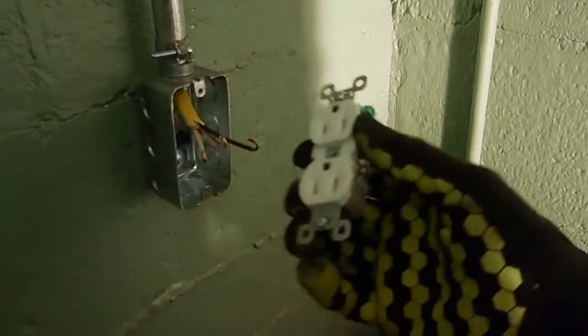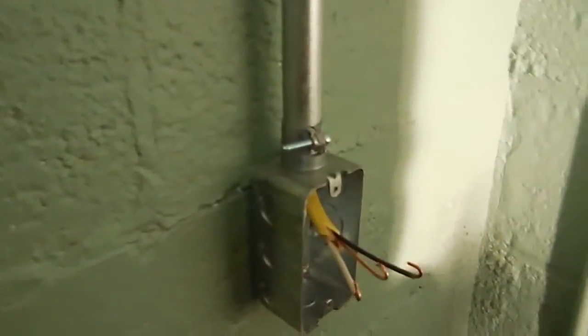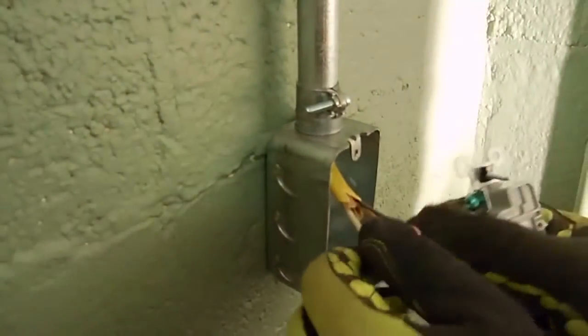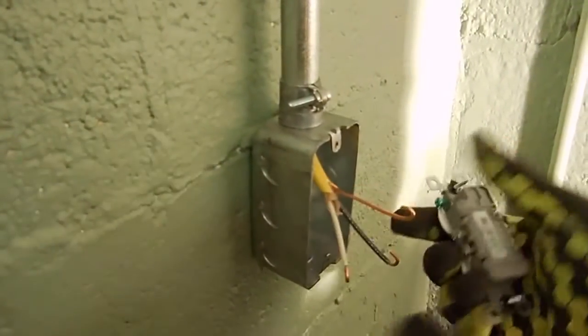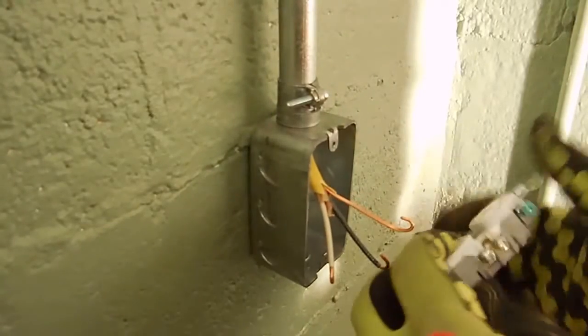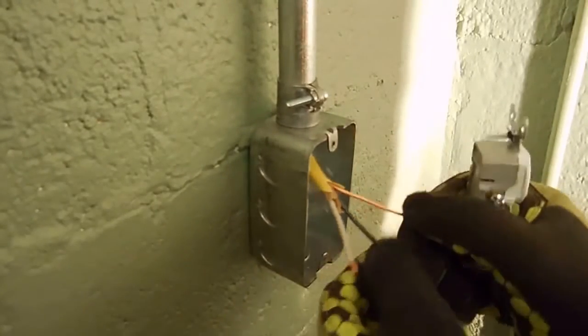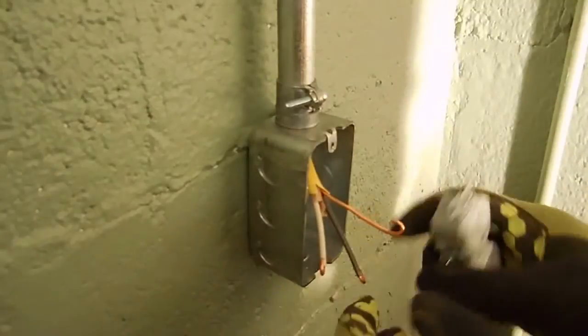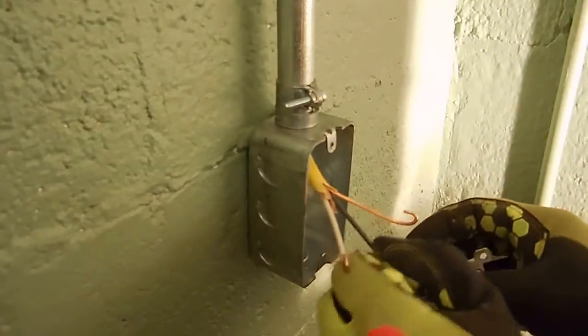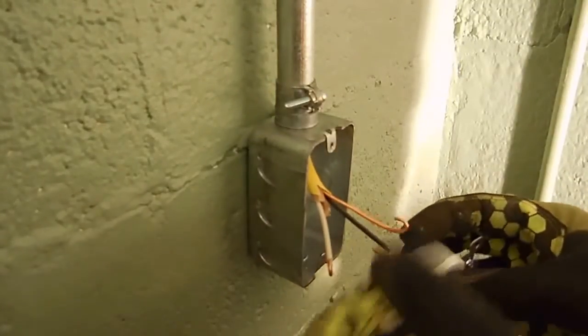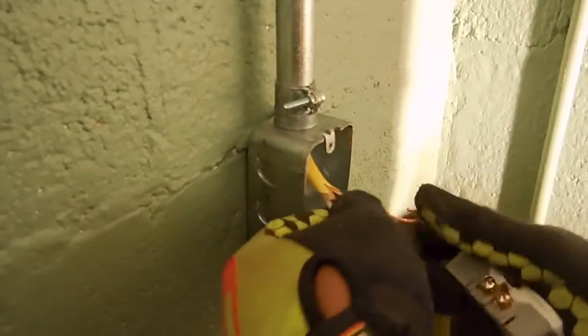Let's see, okay. Got the positive, negative, and our ground here, our common in houses. Blacks can go on the brass side with my shepherd's hook going with the screw.